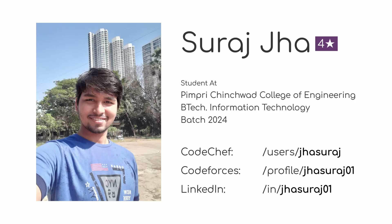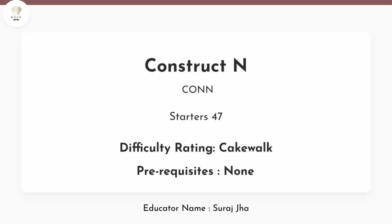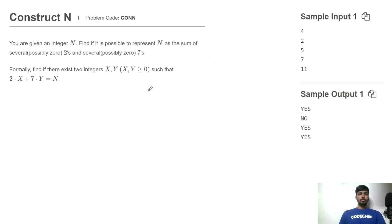Hello friends, welcome to CodeChef. This is Suraj and in this video let's discuss this problem: Construct N from 2s and 7s. In this problem, we are given one integer N and we need to find if it is possible to represent N as a sum of several twos and several sevens.